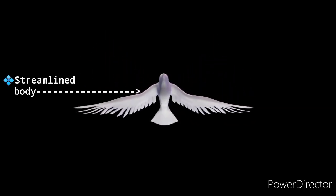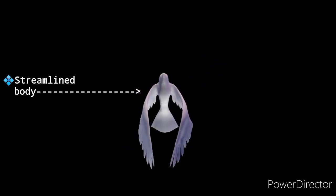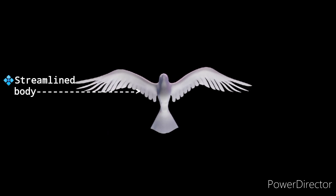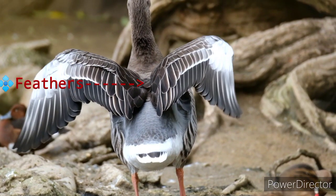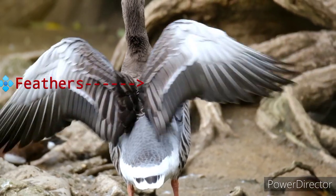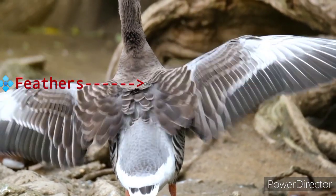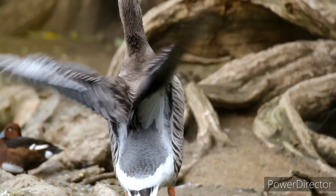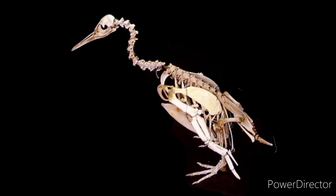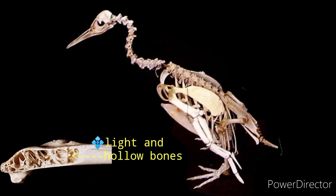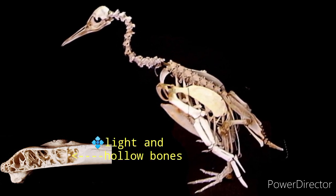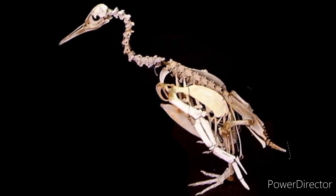Now let's see some flight adaptations in birds. The bodies of birds are streamlined to help them move through air easily. Their body is covered with feathers, which help the birds fly. The bones of birds are hollow and lightweight to keep their body weight low.